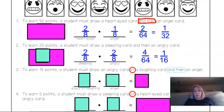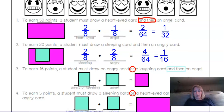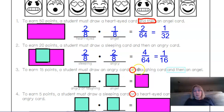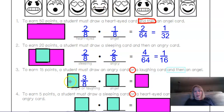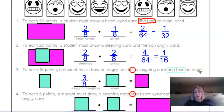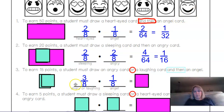To earn 15 points, a student must draw an angry card or a laughing card, and then an angel. Notice the word 'or' — when you see 'or' in a probability, that means you're combining things together. There were two angry cards, and then a laughing card: there's one of them. So altogether, angry or laughing was three of the eight cards. Then drawing an angel card — after resetting back to normal, still eight cards, just one angel. So 3/8 times 1/8 is 3/64.